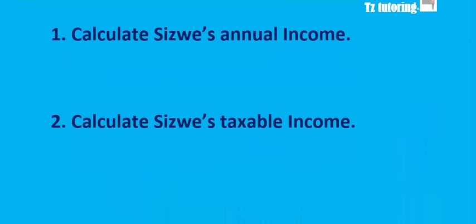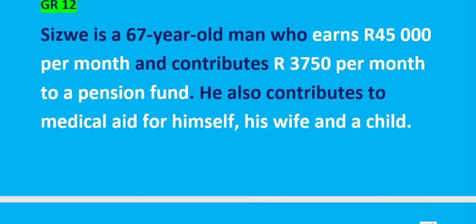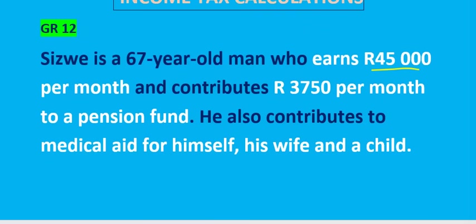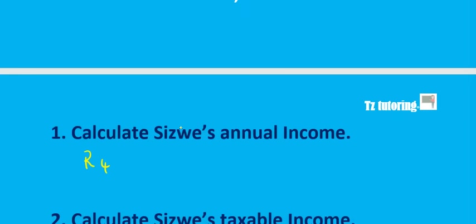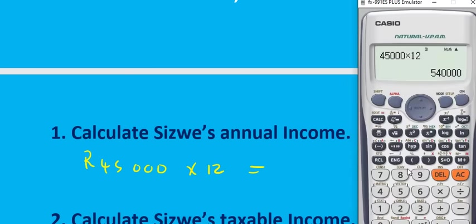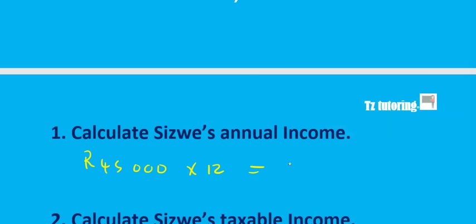Number 1: Calculate Sizwe's annual income. To calculate the annual income, we need to take the monthly income — 45,000 in this case — and multiply it by 12. So 45,000 multiplied by 12 will give us 540,000. That is how we calculate annual income.